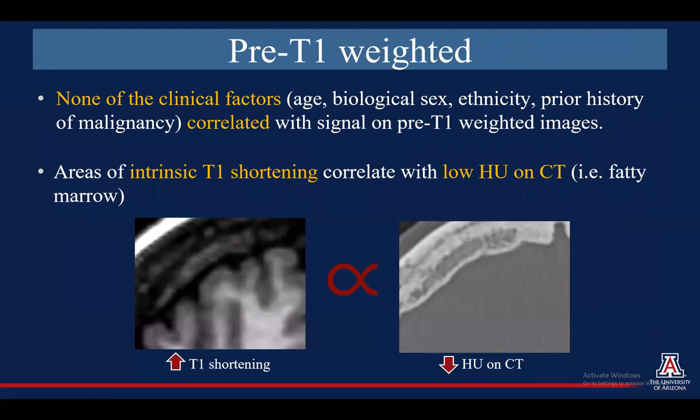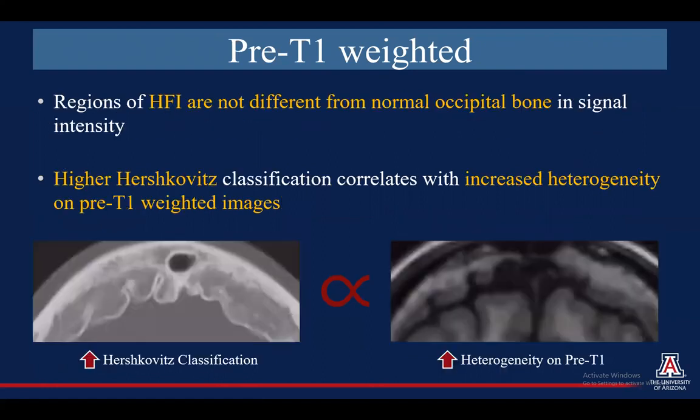For the pre-T1 images, we found that none of the clinical factors correlated with signal intensity on pre-T1, and areas of intrinsic T1 shortening, or T1 hyperintensity, correlated with areas of low Hounsfield units on CT, which we would expect for fatty marrow. Regions of HFI were not different from the normal occipital bone in signal intensity, but a higher Hershkowitz classification, or a higher percentage of HFI involving the frontal bone, was associated with increased heterogeneous signal on the pre-T1 images.